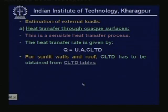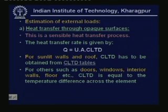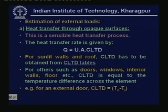CLTD tables are used for all sunlit walls and roof. For other elements that are not sunlit or have very small thermal capacity — such as doors, windows, internal walls, and floor — the CLTD is simply equal to the temperature difference across the element. For these elements the heat transfer rate is simply Q = UA × (T_out − T_i), where T_out is the design outdoor temperature and T_i is the design indoor temperature.